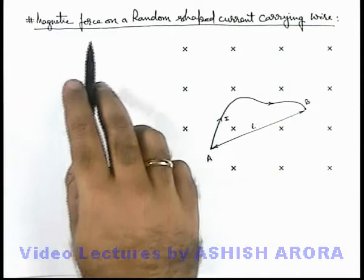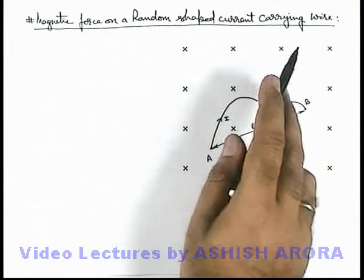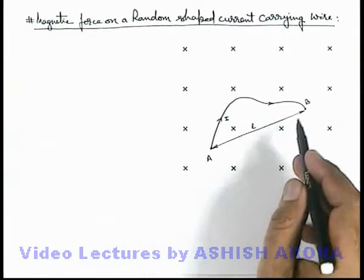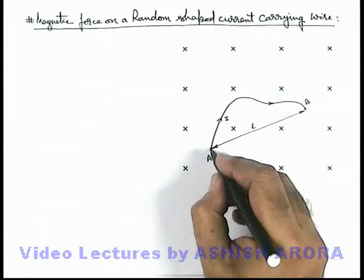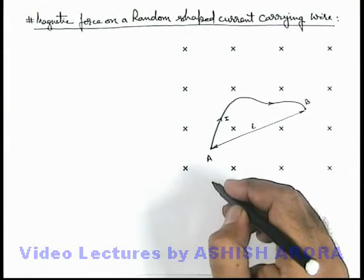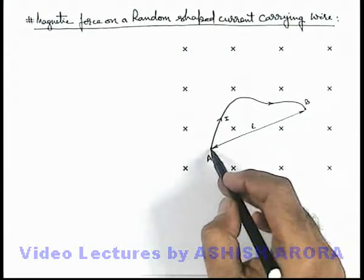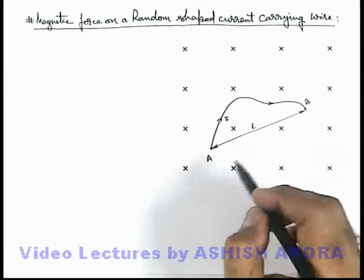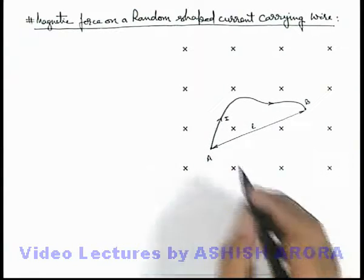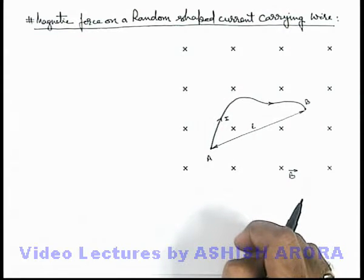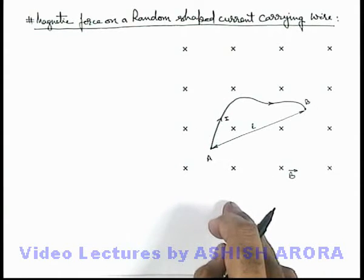Let us now study the magnetic force on a random shaped current carrying wire. Here we can see a wire which carries a current i, and the wire edges are A and B. The separation between the two endpoints of the wire is l. We are required to find the magnetic force on this current carrying wire if the magnetic induction is B, which is acting into the plane of the surface.